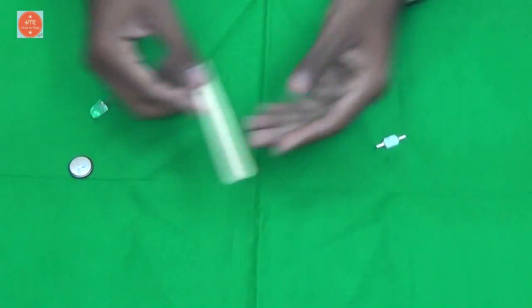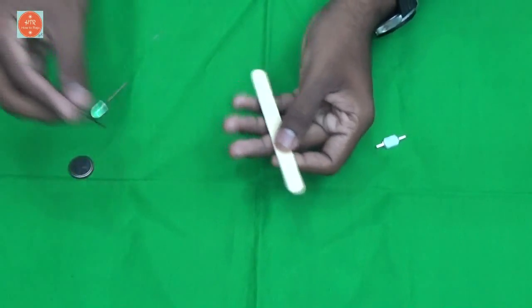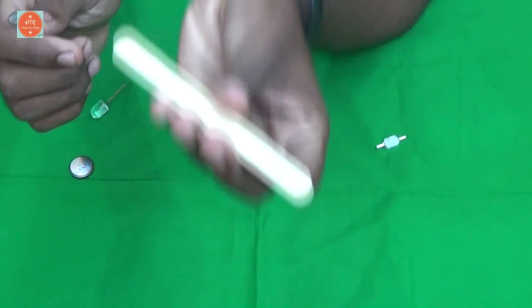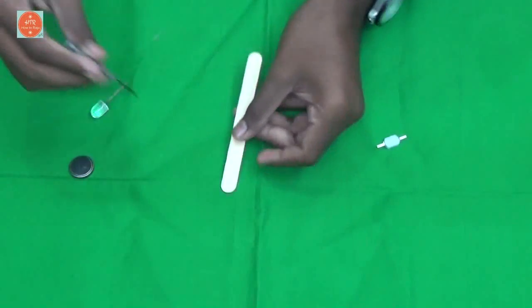At very first, take the popsicle stick and make two holes in one inch like this.